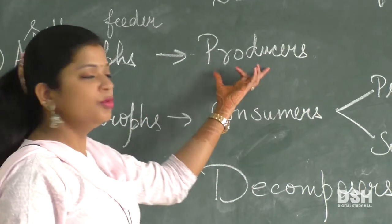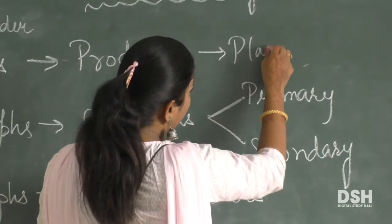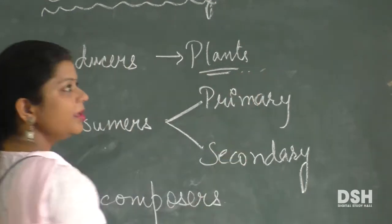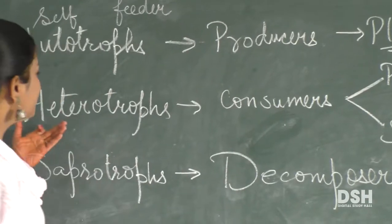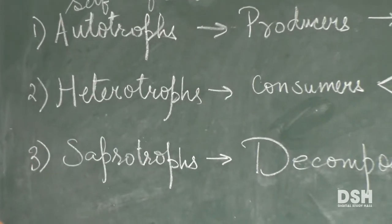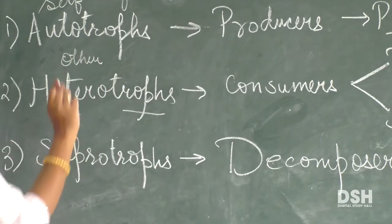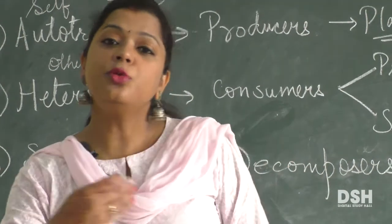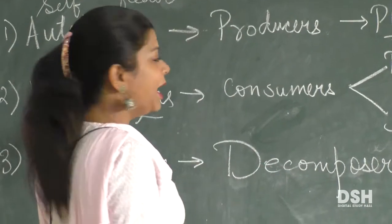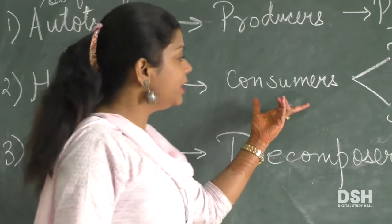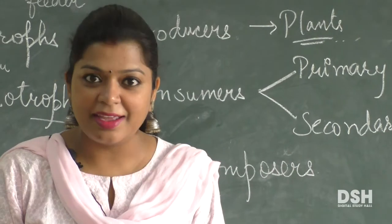In autotrophs, 'auto' means self and 'trophs' means feeders, so we call them autotrophs. We call them producers, and these are actually plants which make their own food. Then we come to heterotrophs — 'hetero' means other and 'trophs' again means feeders. We call them consumers.